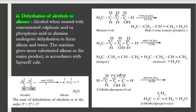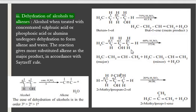Alcohols undergo dehydration in presence of concentrated sulfuric acid according to Zaitsev's rule. Zaitsev states that the OH group which is present on the carbon is considered the alpha carbon atom, and the immediate next carbon atom is called the beta carbon atom. During dehydration, the beta hydrogen atom will be eliminated along with the OH group and an alkene will be formed.